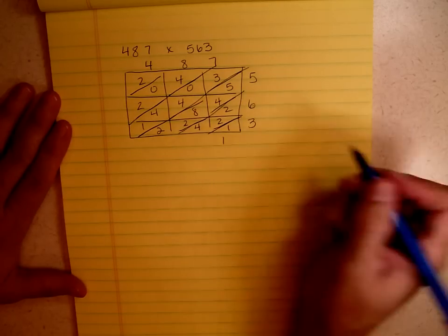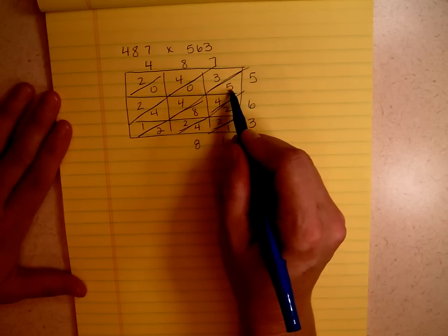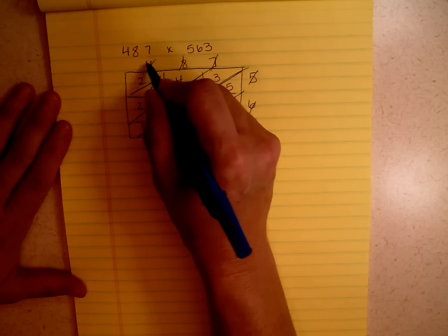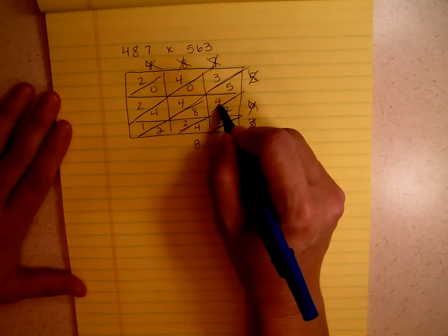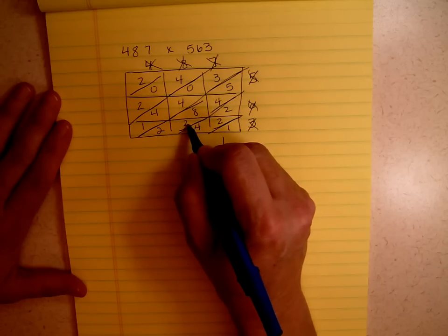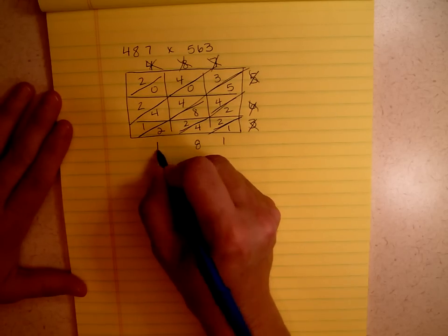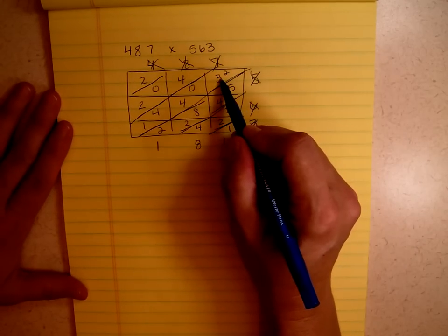1, 2 plus 2 plus 4 is 8. And let's cross these out. I'm getting a little confused. They're starting to make me want to add them in. So let's see. 5 and 4 is 9. 9 and 8 is 17. 17 and 2 is 19. 19 and 2 is 21. I'm going to put my 1 and put a little 2 up there to remind me.